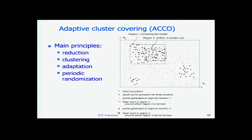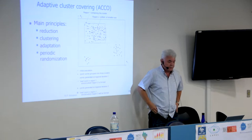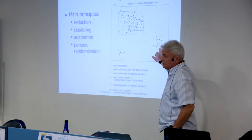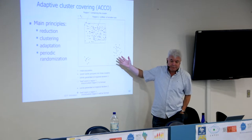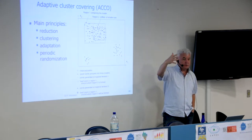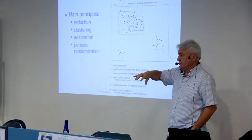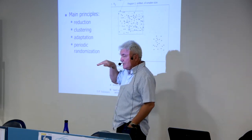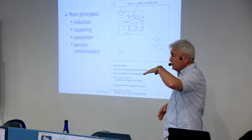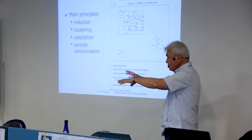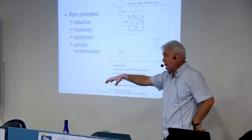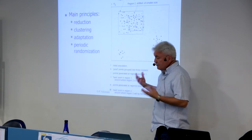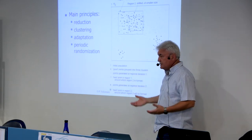The common principle shared by all random search or randomized search algorithms: randomly generate vectors in the decision variable space, remove bad points, and add new points expected to be better. In this way they implicitly imitate gradient search — gradient also points toward areas where function values are lower. It is an implicit, rather than explicit, calculation of gradient direction.